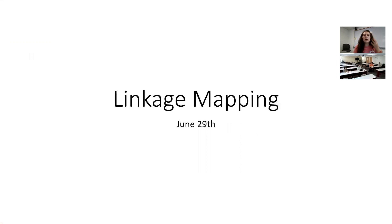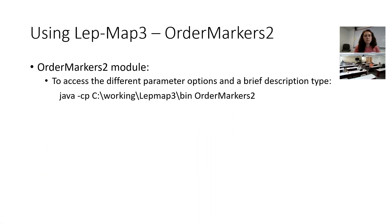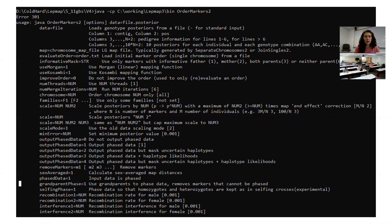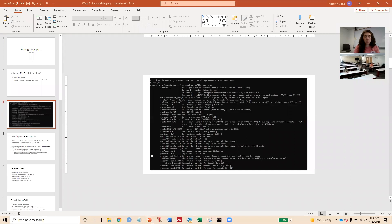This is our third week of working on language mapping in Lep-MAP3. Last week we left off right at the Order Markers 2 module, which is the second-to-last thing we need to do in Lep-MAP3. As a refresher, we enter the same first segment of the command, which is Java. The first segment is java-cp, the location of our Lep-MAP3 bin folder, and then the Order Markers 2 command. We can enter that to get a description of all the different options, and after deciding which settings we need, we can run that in the command prompt.